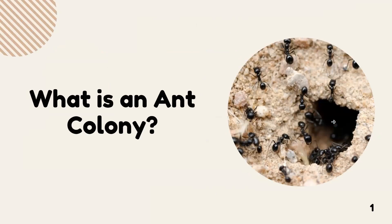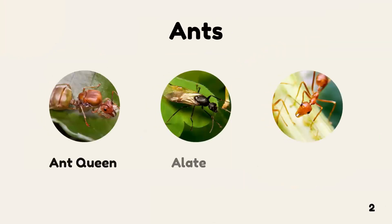An ant colony is a population of a single species of ant that are capable of maintaining a life cycle. Every ant colony consists of three types of ants: the ant queen, the alate, and the soldiers. The ant queen lays the eggs and is the main source of reproduction. The alates have wings and use them to travel to other colonies — the female alate is a future queen, and the male alate dies shortly after mating. The soldiers are mostly female and maintain the life cycle of the colony through various operations, such as taking care of the eggs or searching for food, which is the main influence behind the ant colony optimization algorithm.